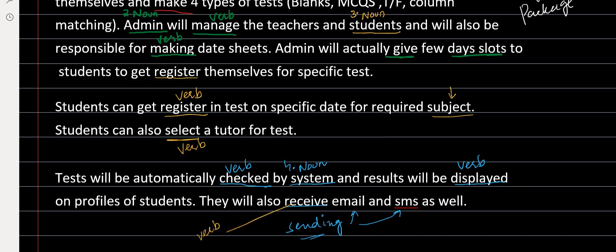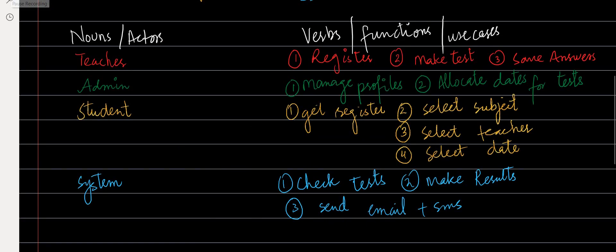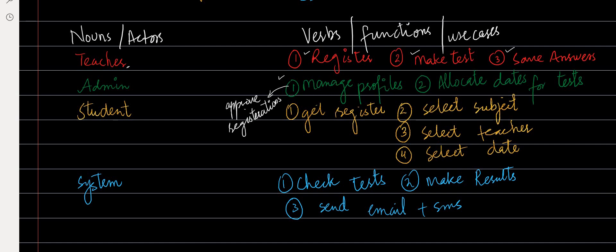After identifying all the verbs and nouns, we just write down the nouns and words in front of each other — that's going to help us understand things better. Here you can see I've written down the nouns or actors, and in front of them I've written the verbs, functions, or use cases. We saw that teachers are able to get registered, make the test, or save the answers. Then admin was able to manage the profiles — in 'manage profiles' you can include things like approve registrations and other such things.